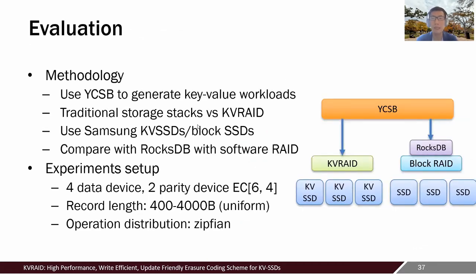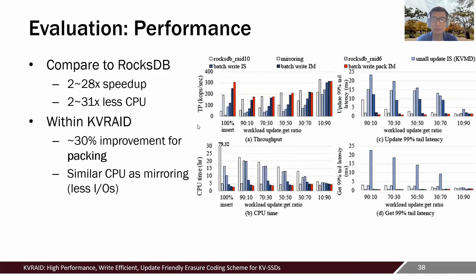For evaluation, we use YCSB to generate workloads and compare with RocksDB with software RAID on a block device. The block SSD and KVSSD in the experiments use the same hardware but different firmware. We evaluate a system with six devices — four for data, two for codes — generating records between 400 to 4,000 bytes and update and get operations based on fan distribution. Performance-wise, KV-RAID can outperform RocksDB by a huge margin while keeping low CPU cost, since traditional software KV stacks have many software layers and LSM-tree requires significant write amplification due to compactions.